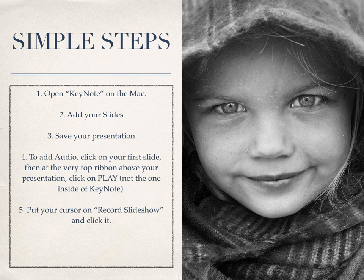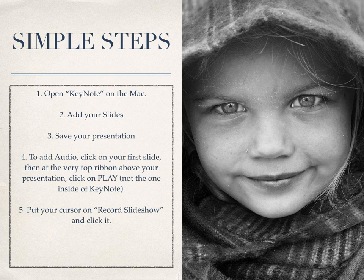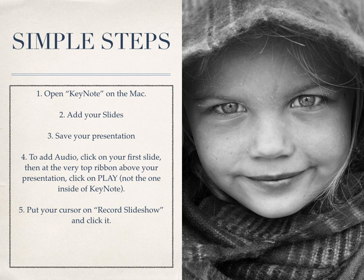Since you've saved your presentation, now it's time to add your audio. Click on your first slide, then at the very top ribbon — at the very top of your screen — go ahead and click on the word 'Play.' Note that there is a play button just below that inside Keynote on the presentation itself; that's not the one you want. Click on the Play button at the very top. When you do, you're going to see an option that says 'Record Slideshow.' Go ahead and click on that.